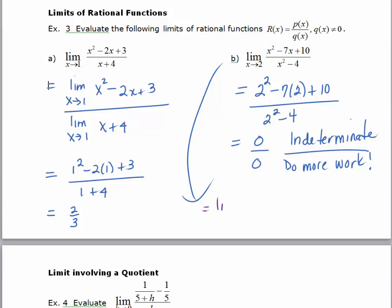is actually equal to the limit as x approaches 2 of x minus 5 times x minus 2 all over x plus 2 times x minus 2. The x minus 2s cancel, and now I can substitute the 2. I get 2 minus 5 over 2 plus 2,